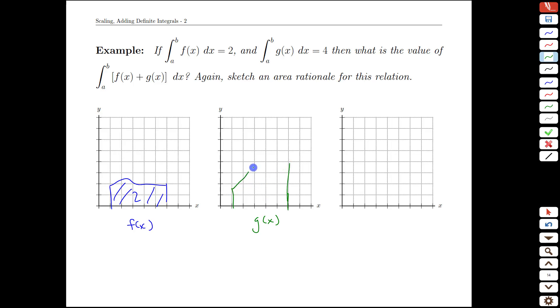So it has an area of 4. These are the properties we've been given, a to b, a to b, and then we're asked what's the area underneath the combined graph?